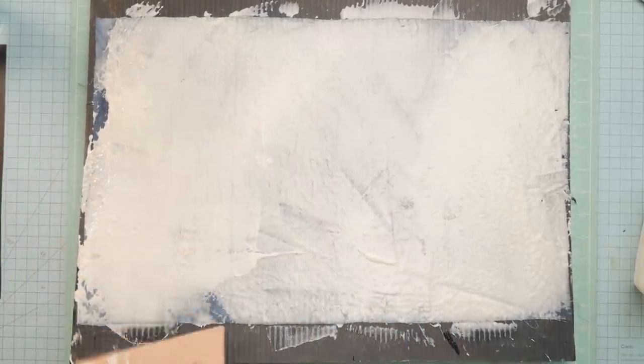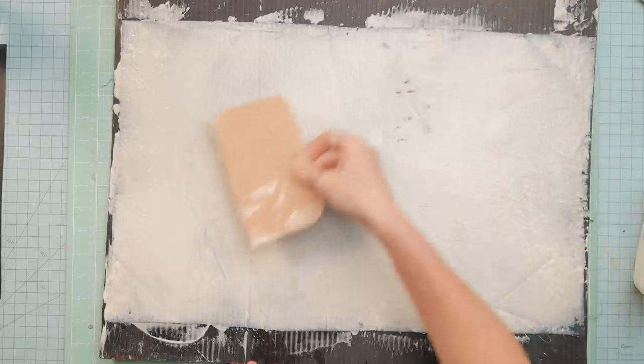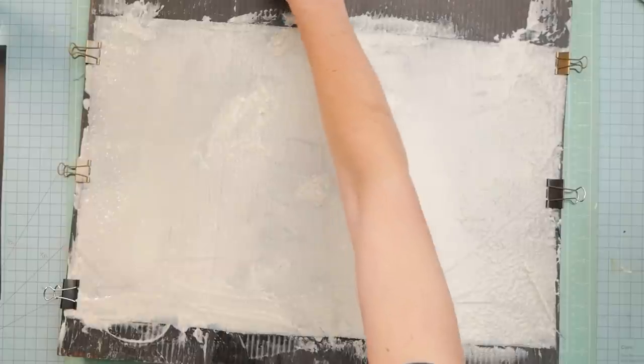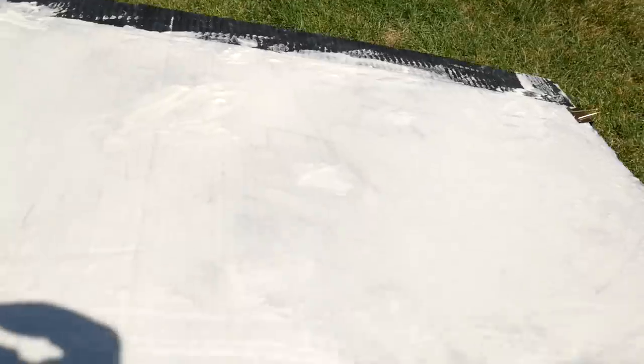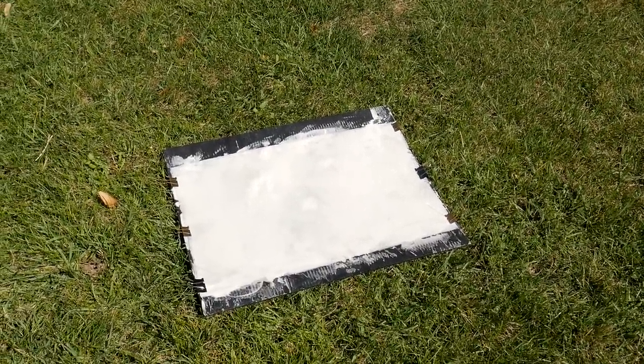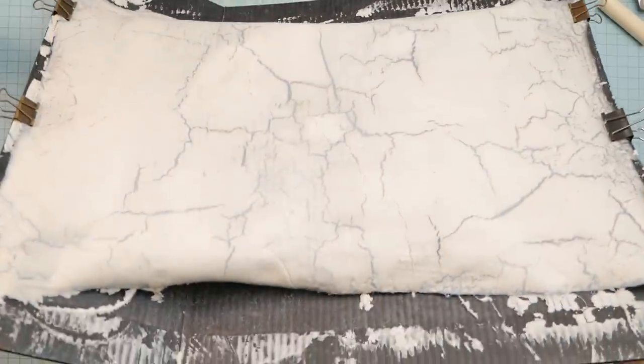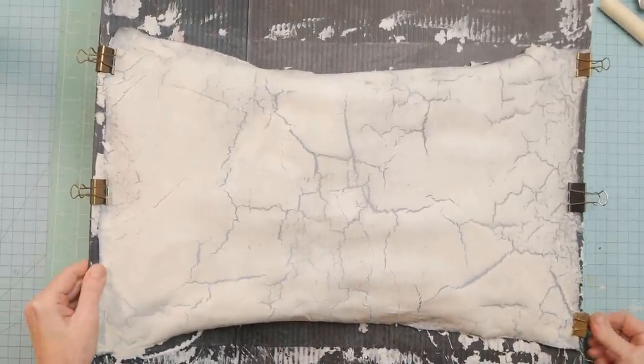And then I took a little scraper tool and I smeared that as evenly as possible over this fabric, clipped the edges so that it wouldn't roll up too badly. I figured the best place to dry it would be outside in the sun. And it did take a minute. But when it finally dried, it was a crusty mess, just kind of gross.